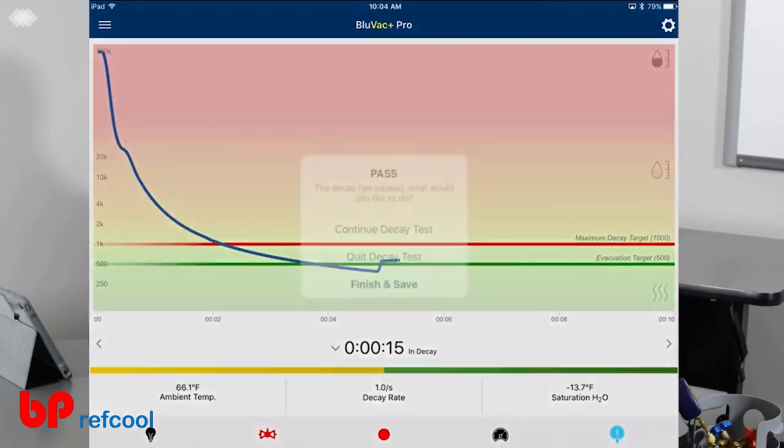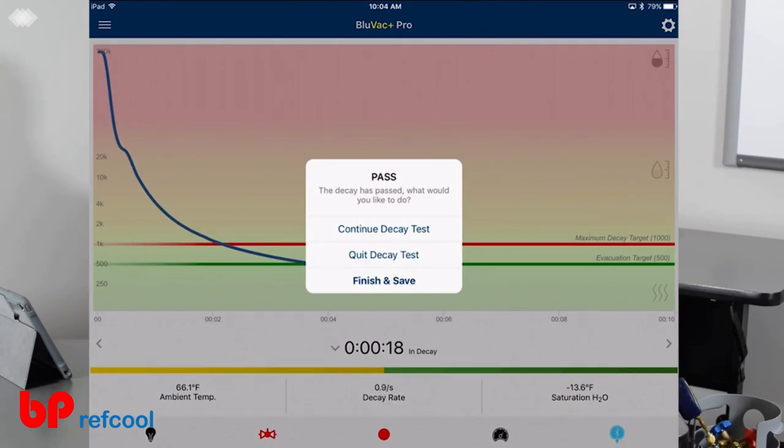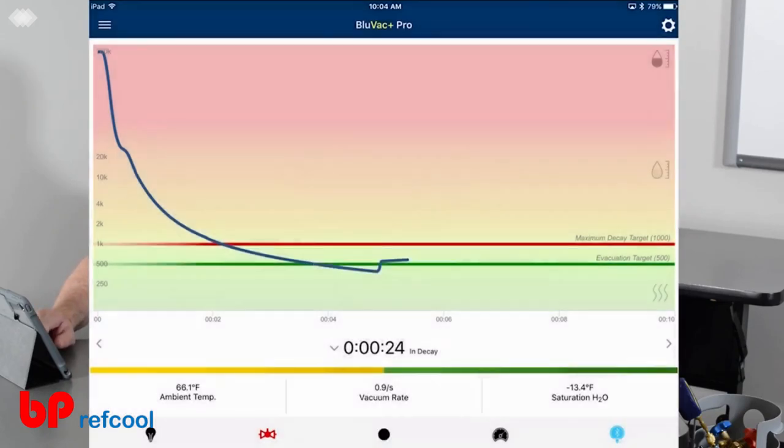Now it does have an algorithm in there that can calculate a fast pass. That's just what happened right now. Because it's calculating the curve of the gauge here, I'm going to finish and save here for a second.